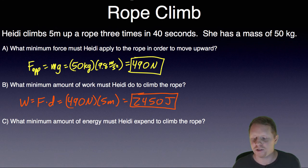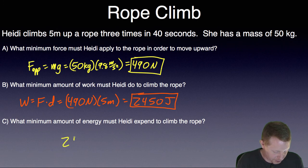And what minimum amount of energy must she expend in order to climb the rope? Well, if she did 2,450 joules of work, she must expend at least 2,450 joules of energy. So that's going to be the same thing, 2,450 joules.